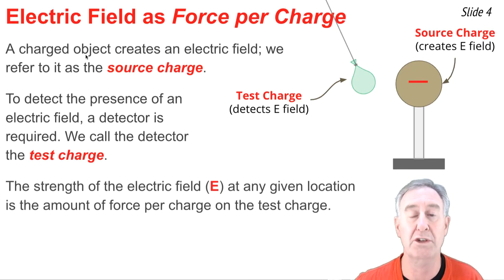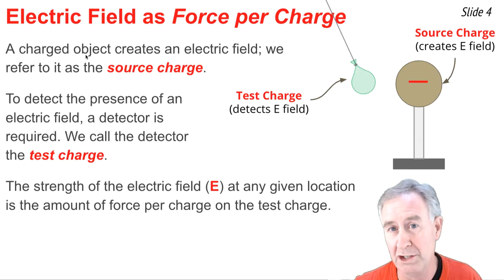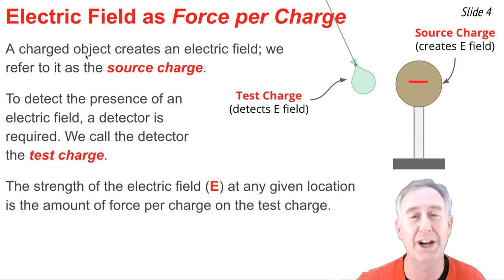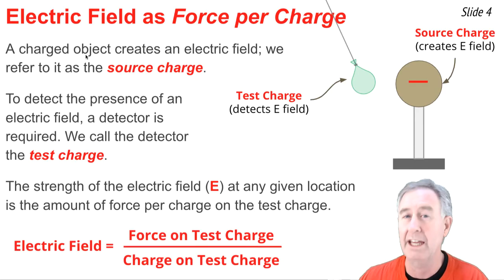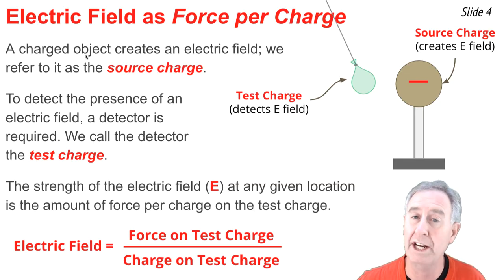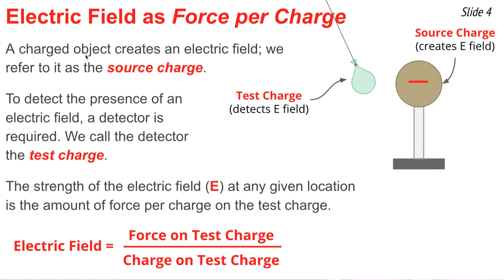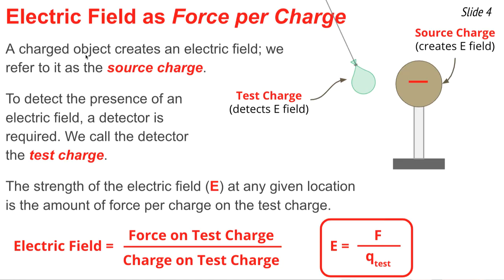At any given location, the strength of the electric field is measured by measuring the amount of force that the test charge experiences and dividing it by the quantity of charge on the test charge. In terms of an equation, we define electric field as the force on the test charge divided by the quantity of charge on the test charge: E = F / q_test. The units on electric field are force units divided by charge units — a Newton divided by a Coulomb, abbreviated N/C.